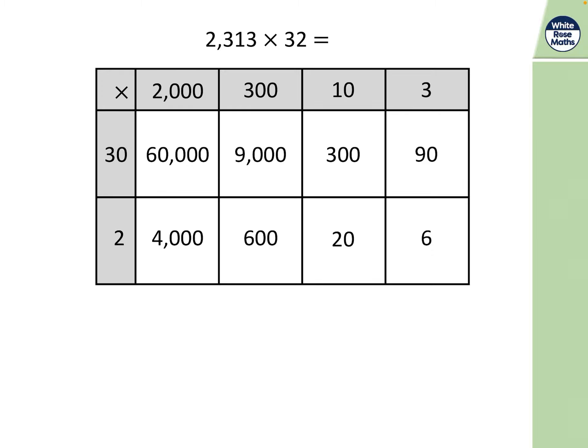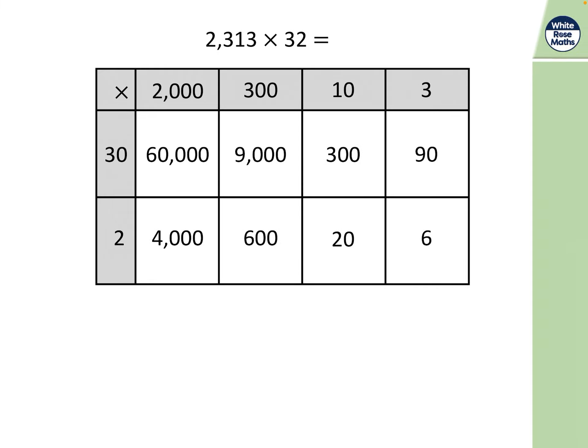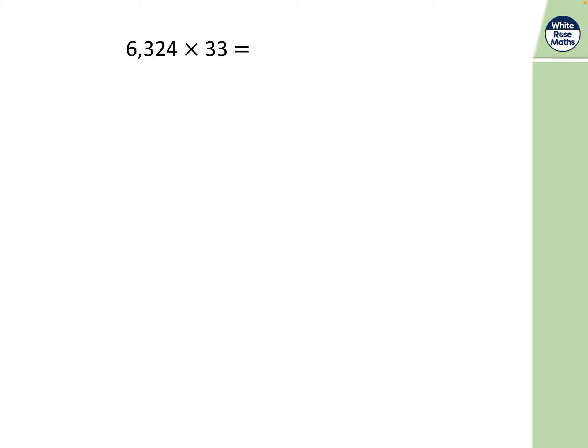Two times two thousand is four thousand. Two times three hundred is six hundred. Two times ten is twenty. Two times three is six. What is my next step? Of course my next step is to then add up all of these. Well done if you were able to get that step. All of those you can do in a column method, the addition in a column method by all means, and you should get seventy-four thousand and sixteen.